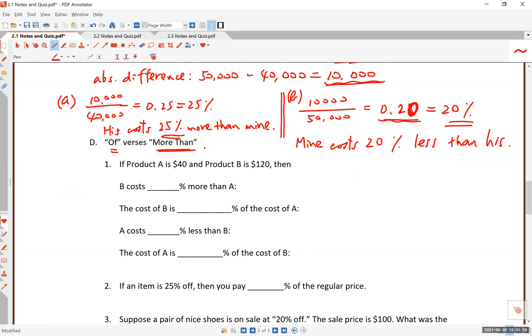Of versus more than. So this is something that you have to be careful about as you state these sentences in English. And so be sure you identify the difference between of and more than or less than. Let's say you have two products here. You have product A and the product B. A costs $40. B costs $120.